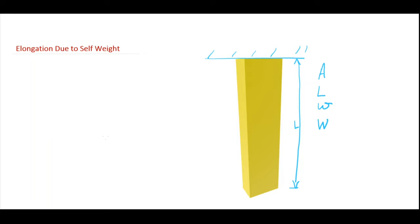Capital W is weight of the whole bar, that will be small w into area of cross-section into L. So this is the volume of the bar, so weight per unit volume into volume will give me the total weight of the bar.